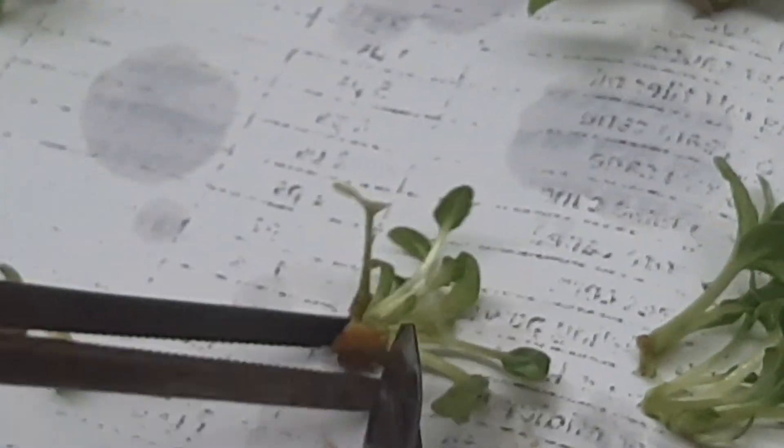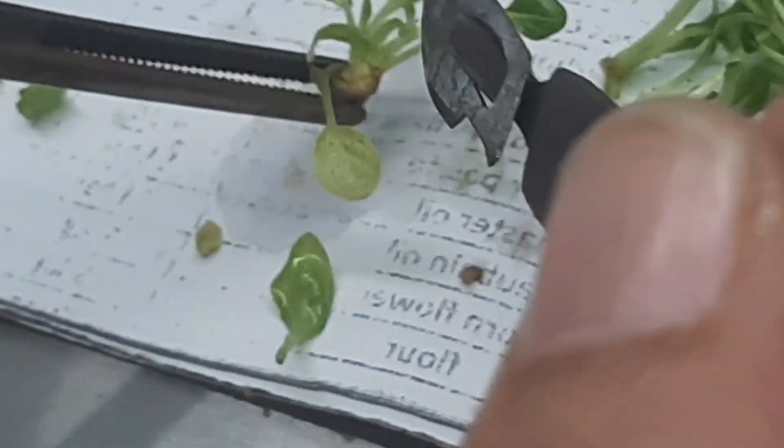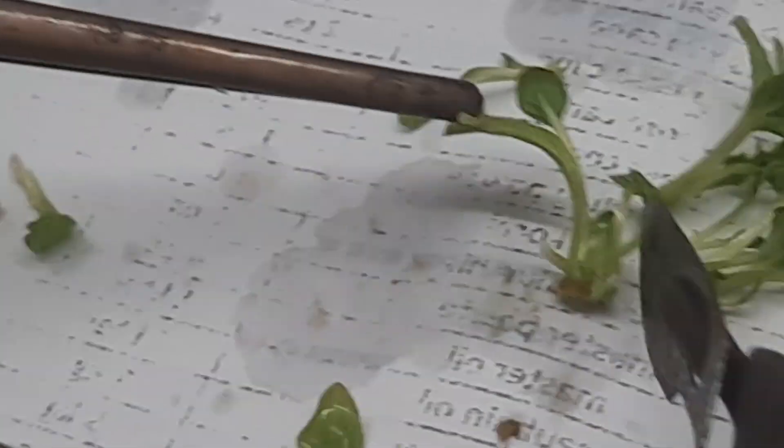Just trimming the basal portion of the multiple shoot. As you can see, the basal portion is a bit brown color and the tissue is almost dead, so we will trim it out. Here it is trimmed already.